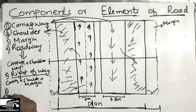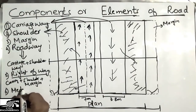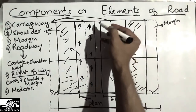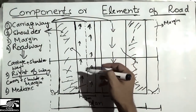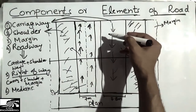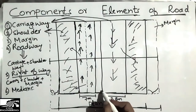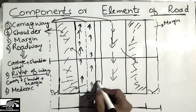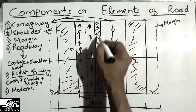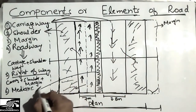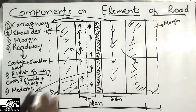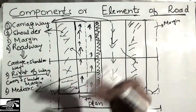The sixth component is the median. The median is provided between opposing lanes of traffic. For example, cars in one lane move in one direction while cars in the other lane move in the opposite direction. They are separated by a dividing strip, and we call this separation the median. The median is provided in every motorway or highway.